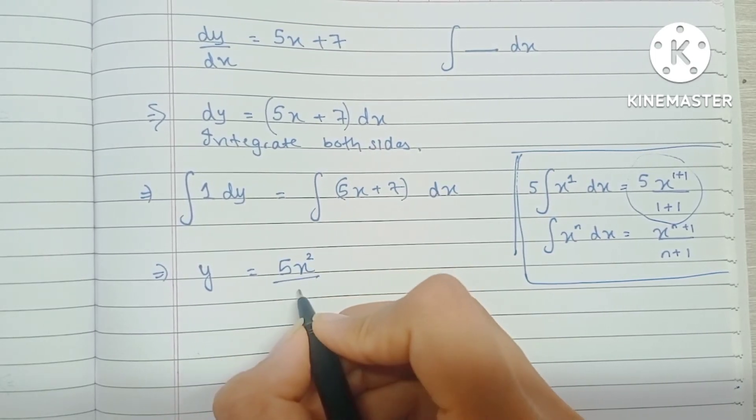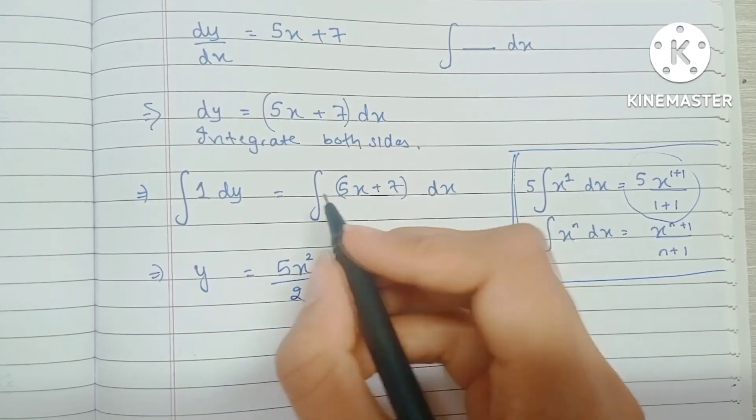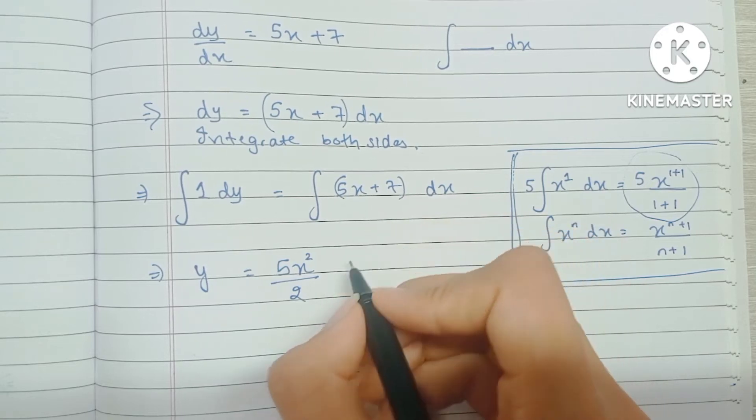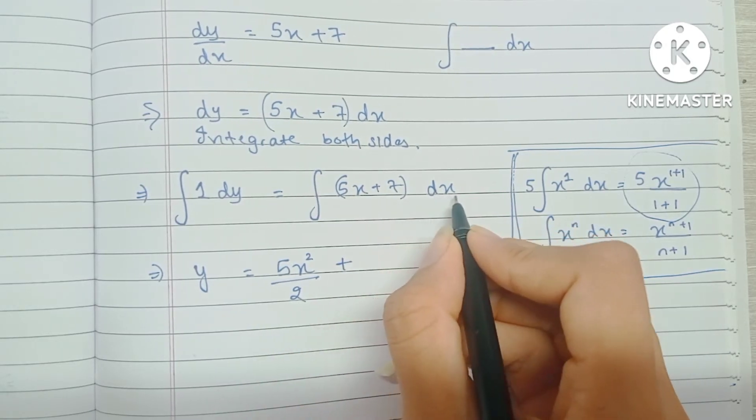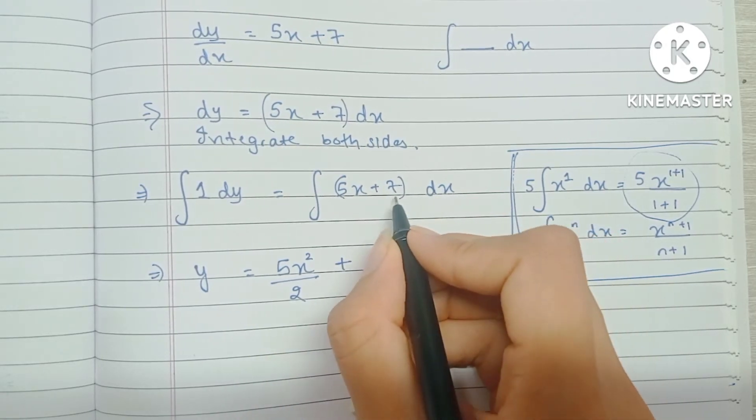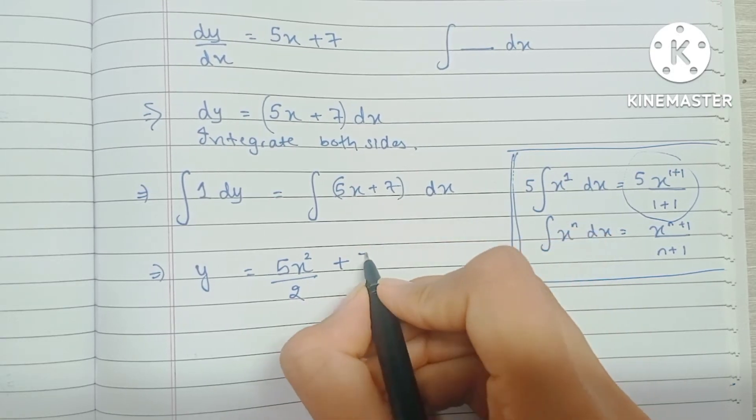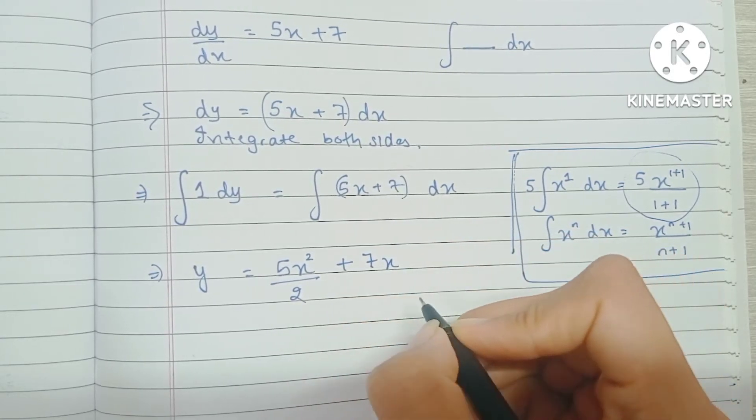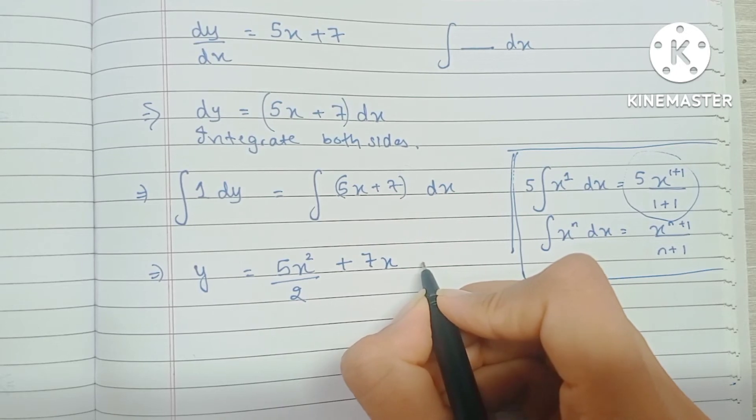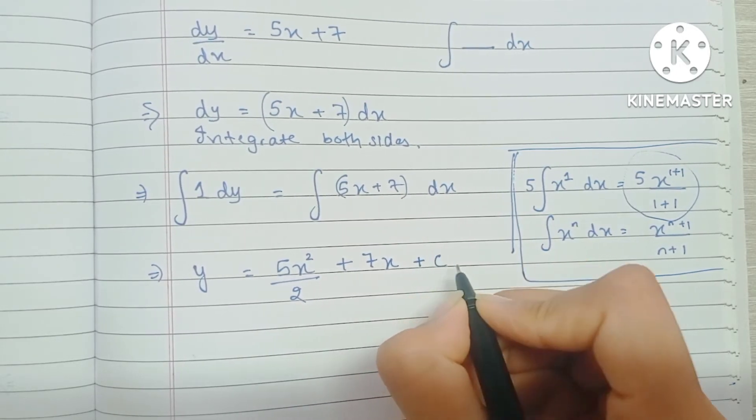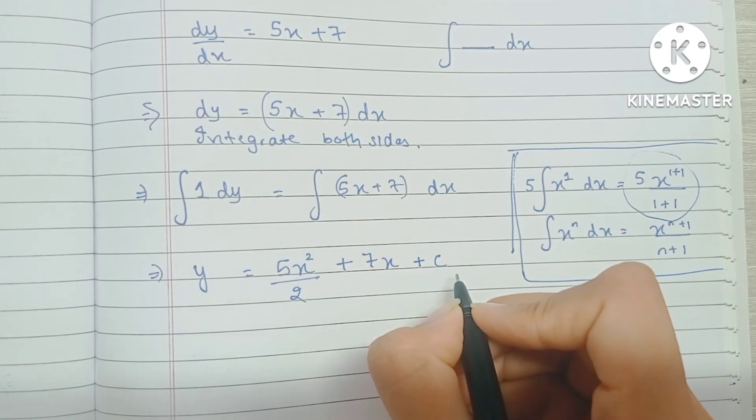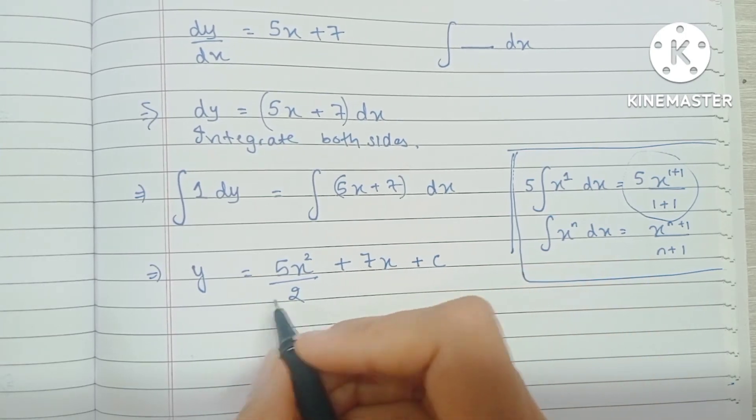Again, we have a constant, so the integration of a constant with respect to x would be that constant into x, so this becomes 7x. And we also have to add an arbitrary constant, so we have to add c, which is what we normally do in integration, in indefinite integration.